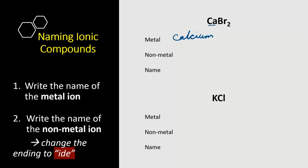Br2 is bromine. Now write down the name of the non-metal ion but change the ending to 'ide', so bromide. Now let's write the full name which is very simple. Just write down the metal calcium.